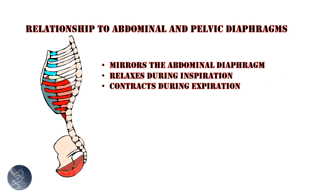The pelvic floor muscles act in a reciprocal manner with the abdominal diaphragm. During inhalation, the diaphragm contracts and descends, and the pelvic floor relaxes. During exhalation, the pelvic floor contracts along with the abdominal muscles, which increases intra-abdominal pressure and aids in the ascension of the relaxing diaphragm.